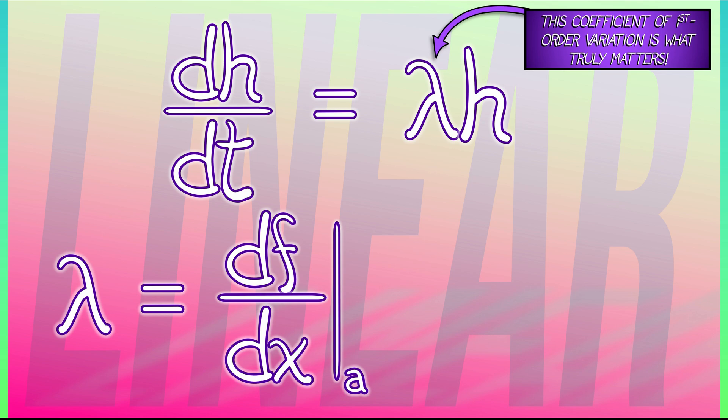Well, if it's negative, then that means h evolves like e to the negative something t. That's a stable equilibrium.